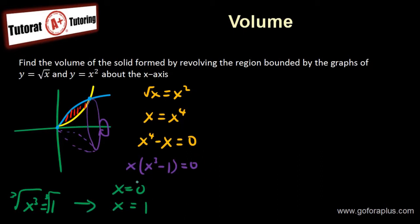Now that I have my two intersecting points, I want to know which function is on top, which function is at the bottom. Well, I know that from 0 to 1, that my square root function is on top, and my quadratic function is at the bottom.